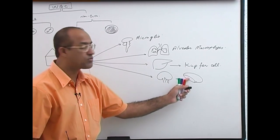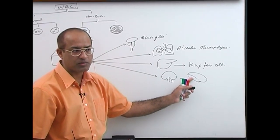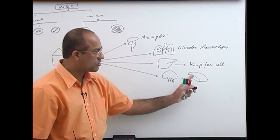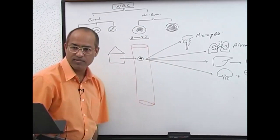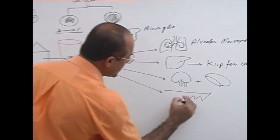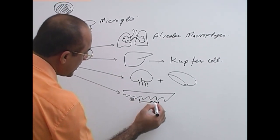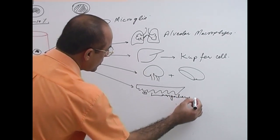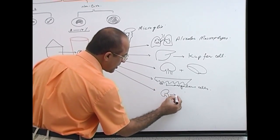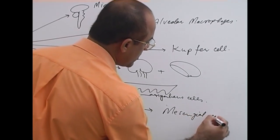A very large number of macrophages are present in the spleen, concerned with phagocytosis of old RBCs, especially in the cords of Billroth. Macrophages also shift to other tissues: if they shift under the skin into the dermis, they are called Langerhans cells. If macrophages go to the kidney, they are called mesangial cells.